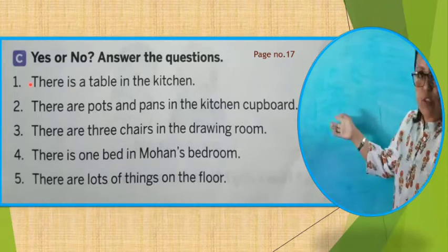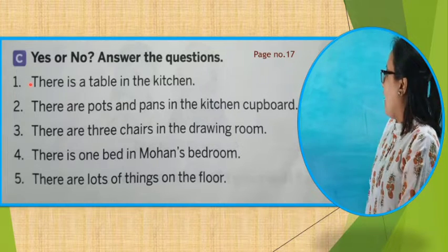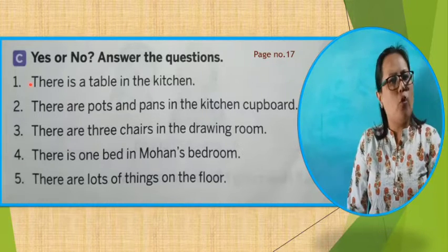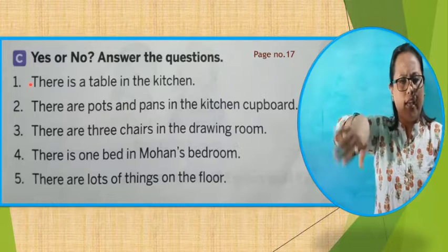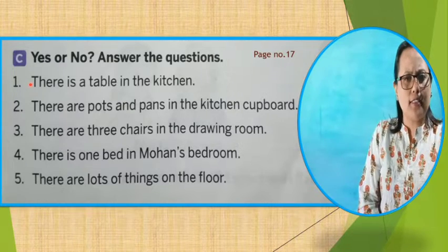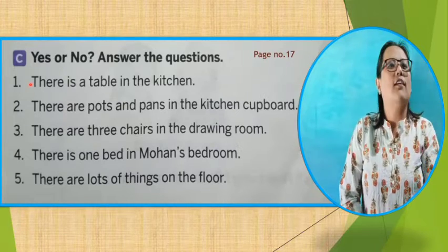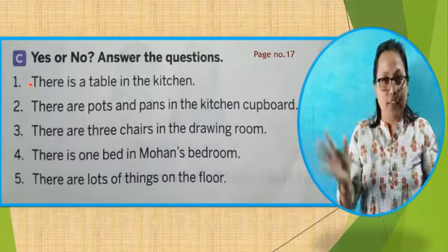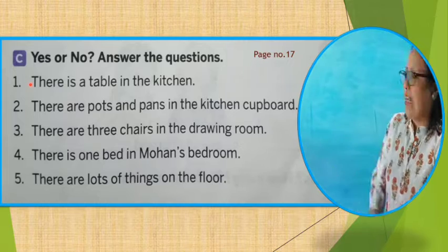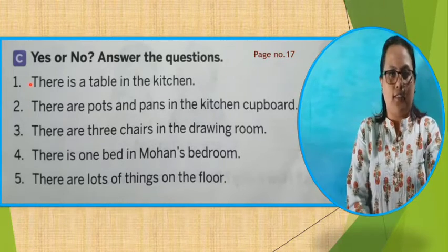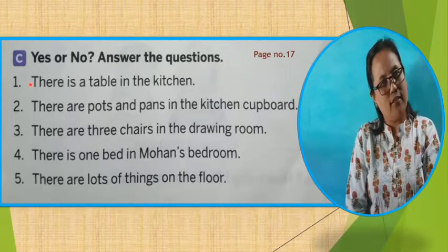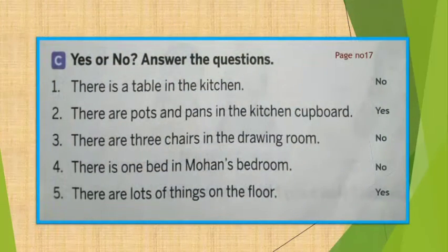Let's see number 5, the last question: There are lots of things on the floor. Remember, in Mohan's bedroom all the things were lying on the floor and on the bed. So the answer will be yes — Y-E-S, yes. There were lots of things on the floor. Today we have done 2 questions. You have to mark the answers in your textbook. Dear children, we will do question number B in our next class.